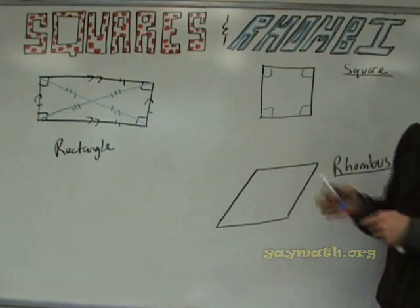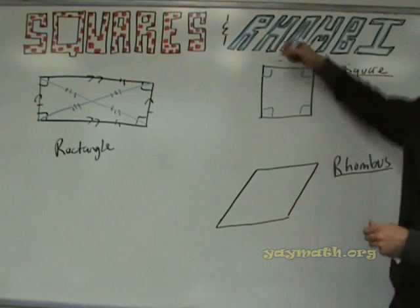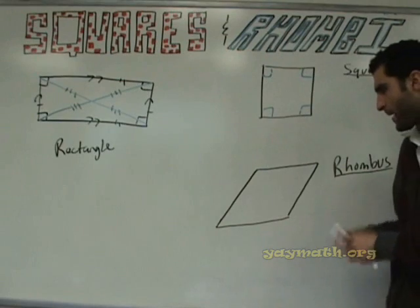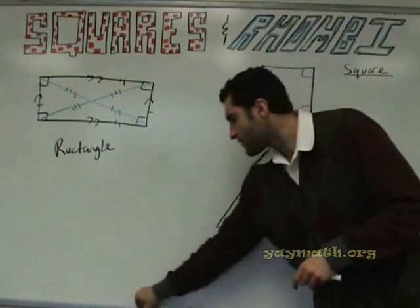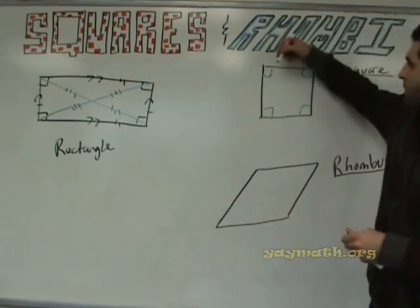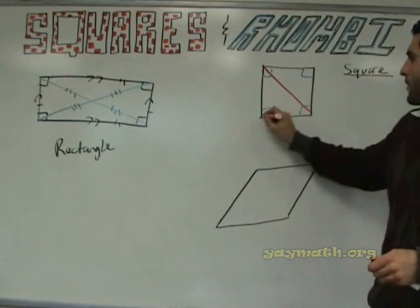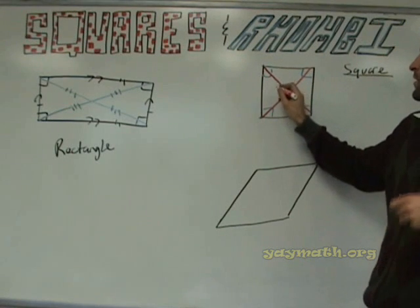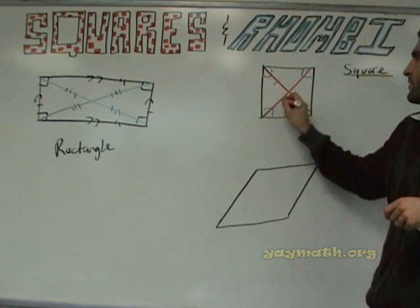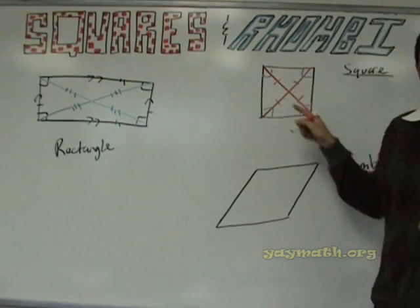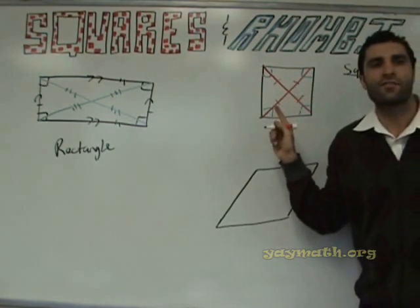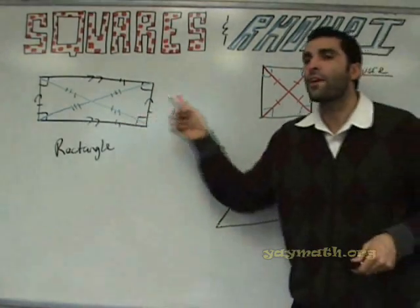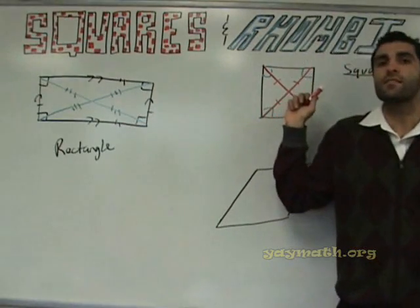So the diagonals are the same and they bisect each other — we can draw that here using red. Alright, does that make sense? Diagonals are the same and bisect each other. Any other rules that apply to both rectangle and square?